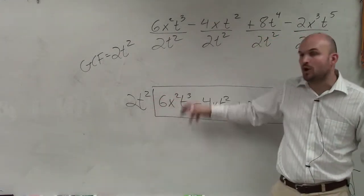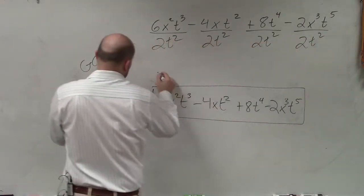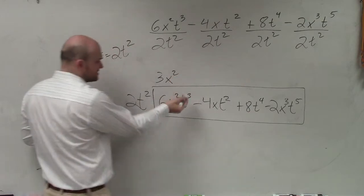2t squared times what gives me 6x squared t cubed? Well, since there's no other x, we know the answer is going to be 3. The x's is going to remain the same.